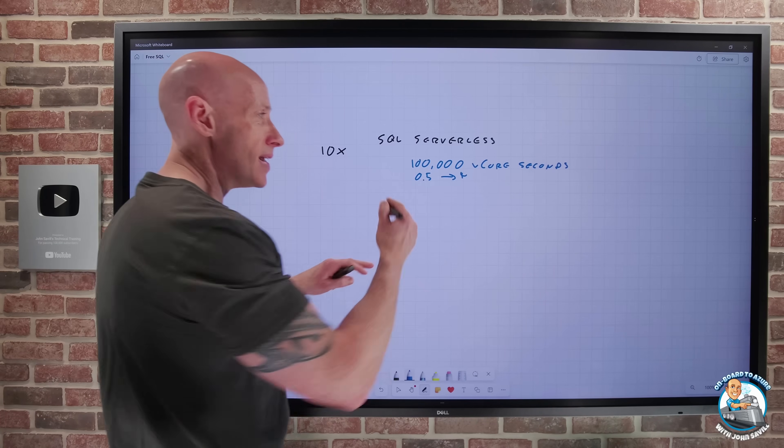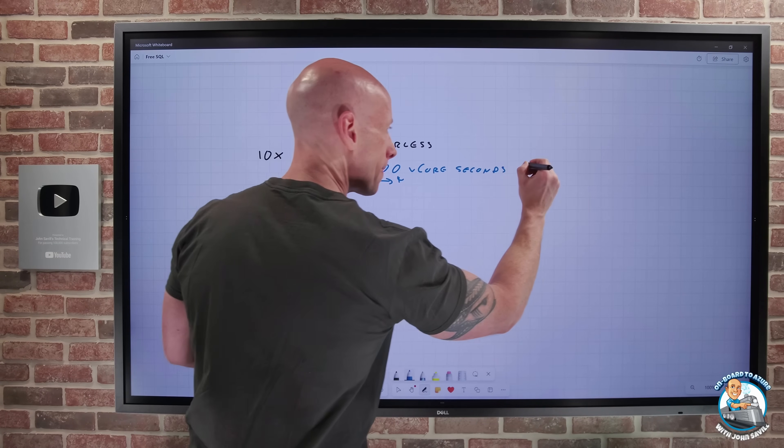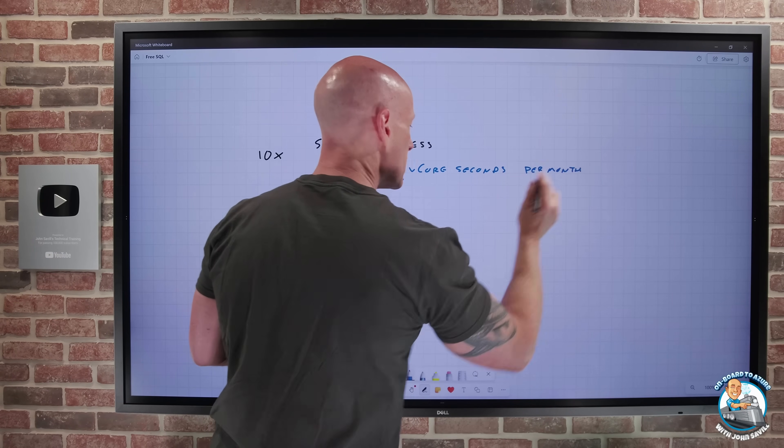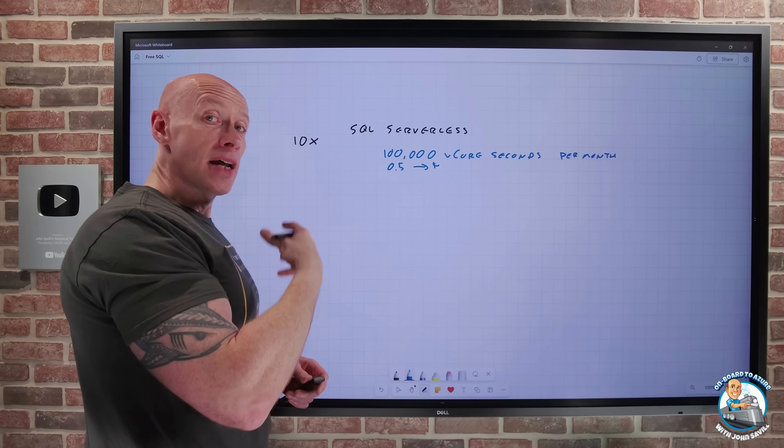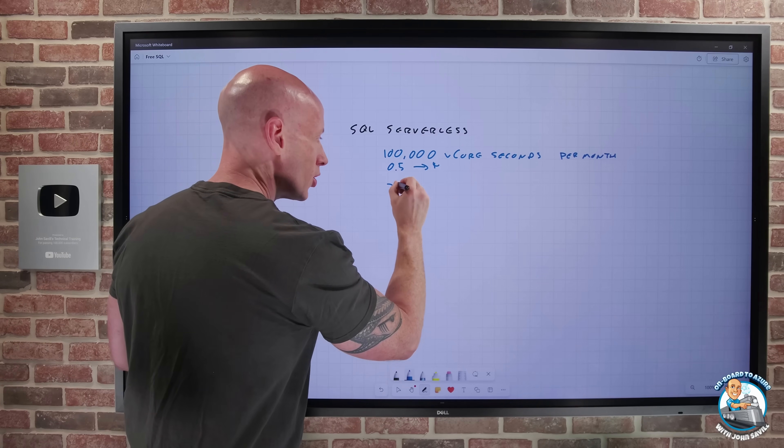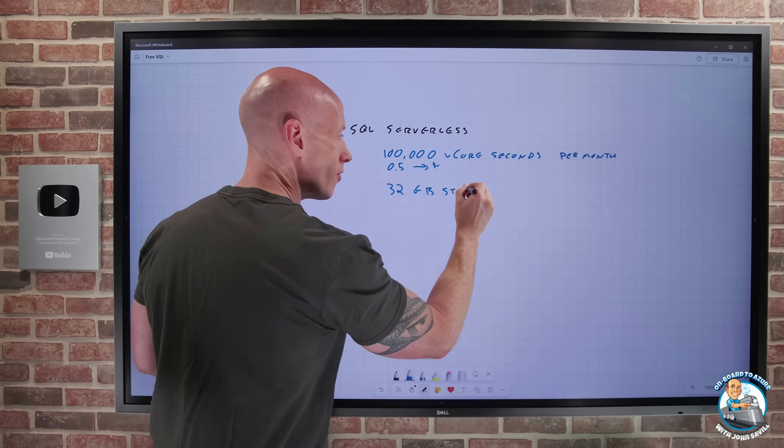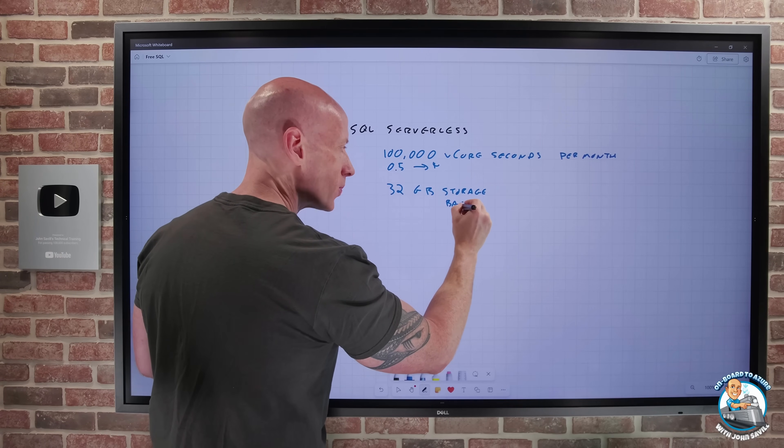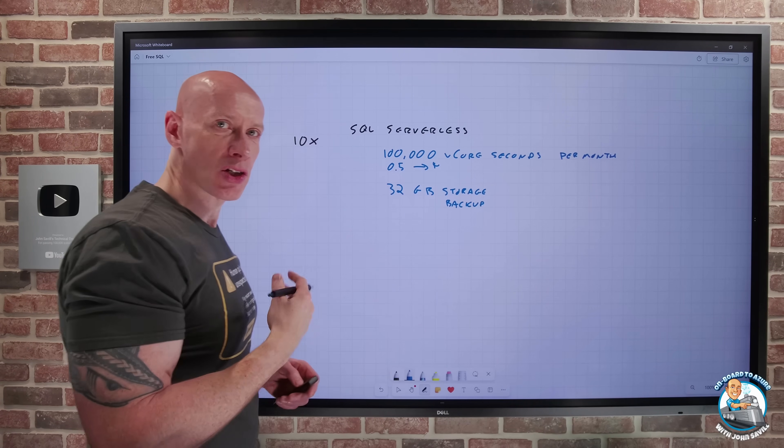So the point here is this is per month, and then it's going to refresh. And as you saw, the other thing you get as part of that is 32 gigabytes of storage and 32 gigabytes of backup. So I can backup the data I'm actually using.